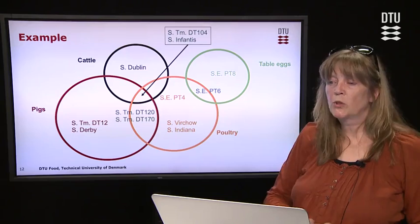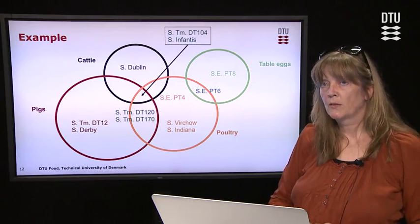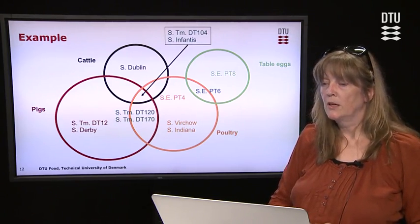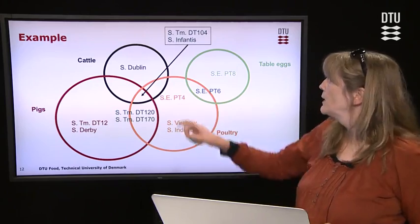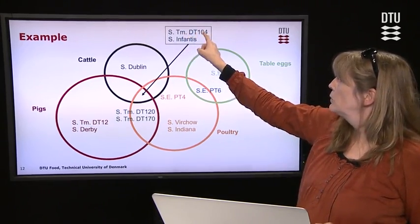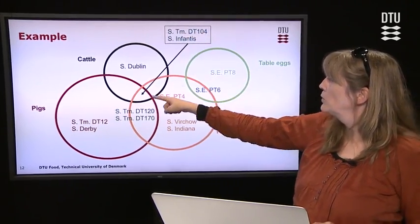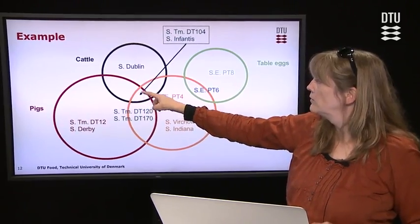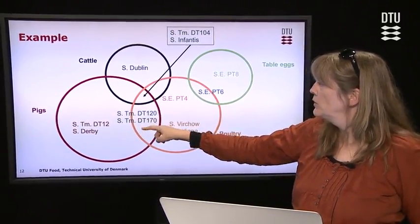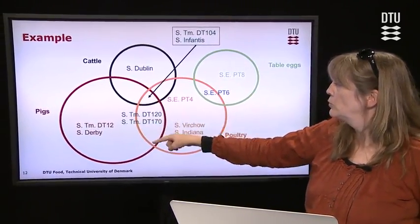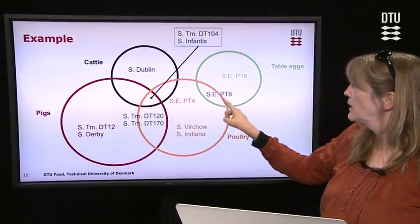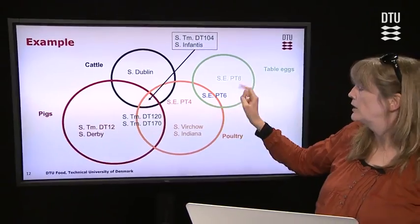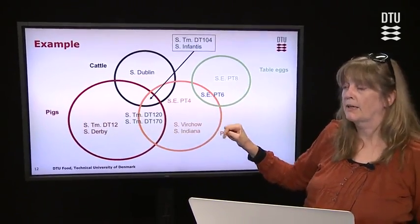We will also have some types that occur in many different reservoirs. For instance, salmonella typhimurium DT104 occurs in three different reservoirs. We have two types that occur in two reservoirs, and one type occurring in both poultry and table eggs.